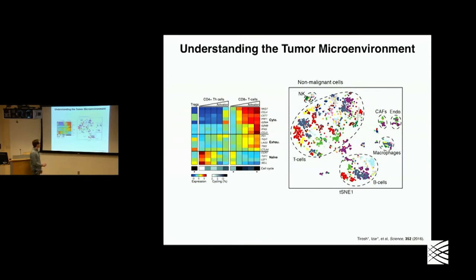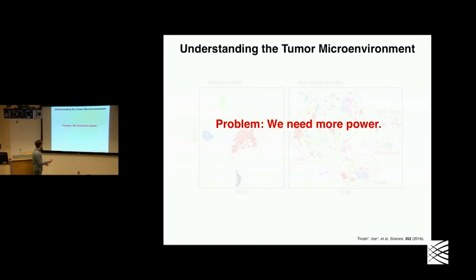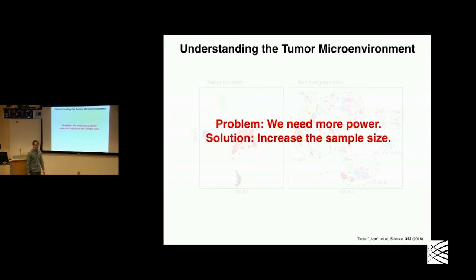We were also able to find all sorts of variation within lymphoid populations within these tumors. As great as this was, we were able to process three or four thousand cells. The problem was that at the end of the day, we needed more power. We wound up with maybe a hundred cells — a hundred T cells from a tumor — and we wanted to increase the sample size.